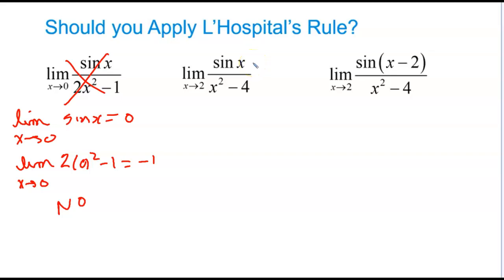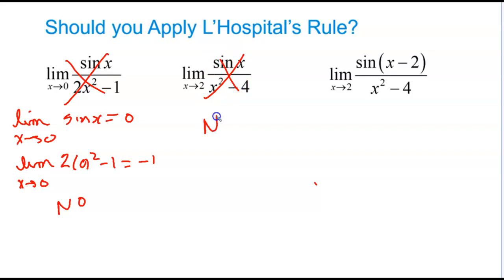Looking at the next one: if you plug in 2, you're going to get sine(2) over 0. That does not form the indeterminate form of 0 over 0, so L'Hôpital's rule does not apply.